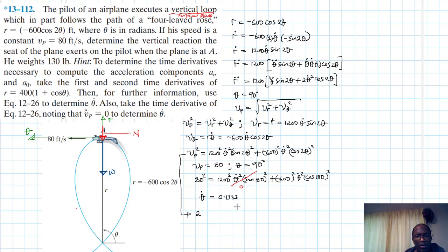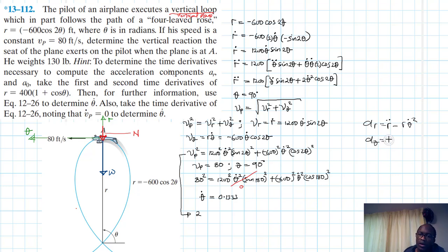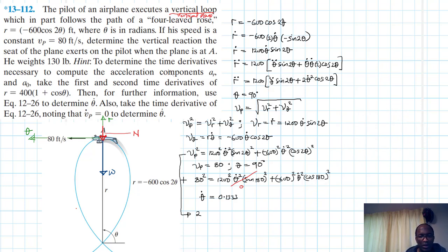Now, a_r is equal to r_double_dot minus r times theta_dot squared, and a_theta equals r times theta_double_dot plus 2 r_dot times theta_dot. We don't have any force in the theta direction, so we don't need theta_double_dot. The formula we need is just a_r equals r_double_dot minus r times theta_dot squared.